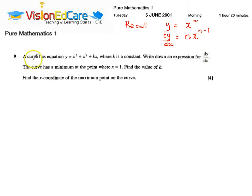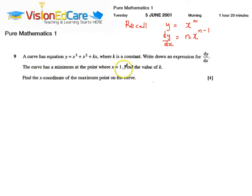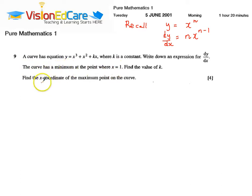A curve has equation y equals x cubed plus x squared plus kx, where k is a constant. Write down an expression for dy by dx. The curve has a minimum at the point where x equals 1. Find the value of k. And finally, find the x coordinate of the maximum point of the curve. We already know the x coordinate for the minimum point, so we just need to find the one for the maximum point.